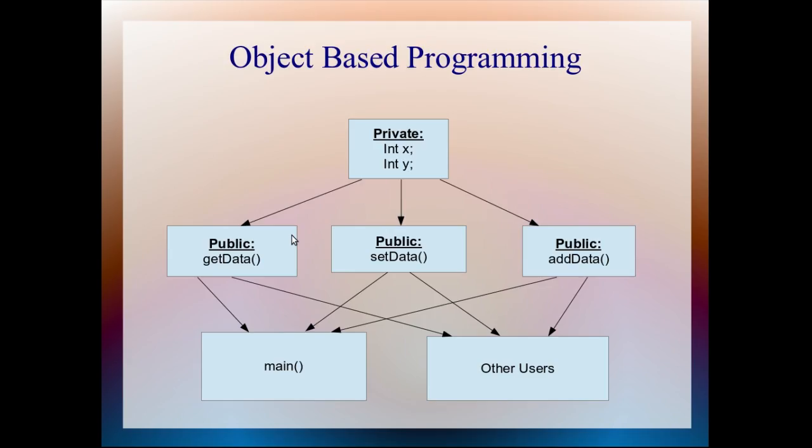And in object-based programming, you can see this as a private section. And there are three bodyguards here. No extra function or extra objects can access this private part directly. If you have to access this private part, then go through these functions. That's why, from main and other users, this x and y is hidden.